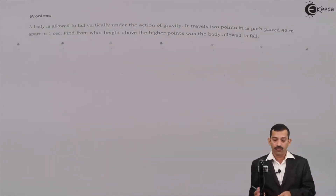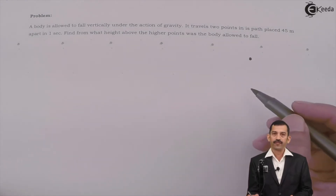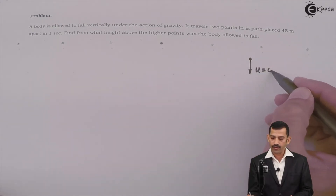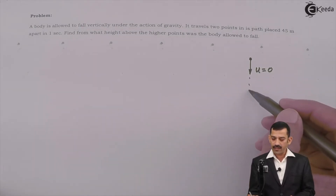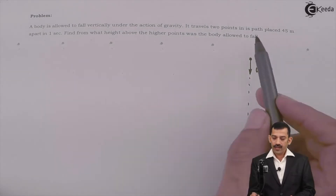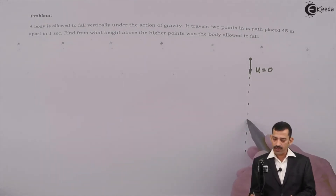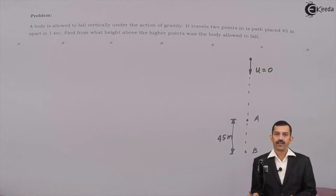The body is allowed to fall vertically under the action of gravity. That means the body is dropped, so initial velocity is zero — u equals zero. Whenever a body is allowed to fall or is dropped from some location, its initial velocity is zero. As it moves downward, it traces a vertical path and travels two points A and B placed 45 meters apart, so this distance is 45 meters.